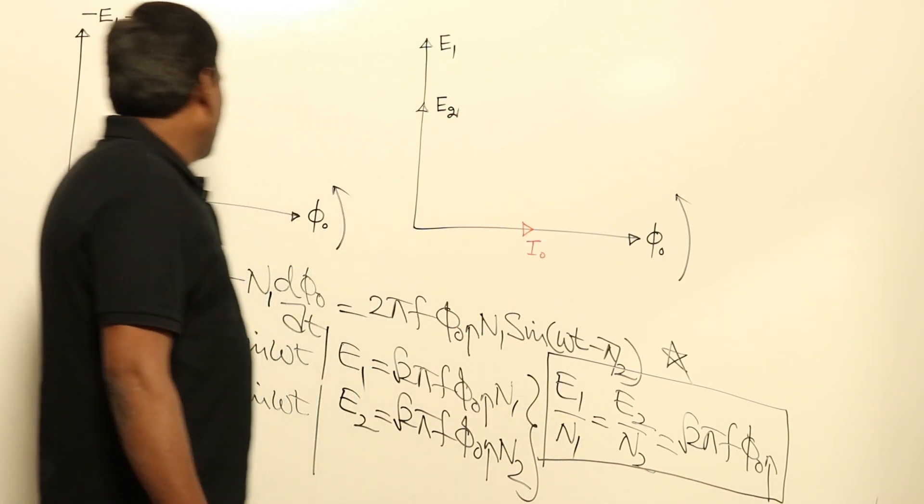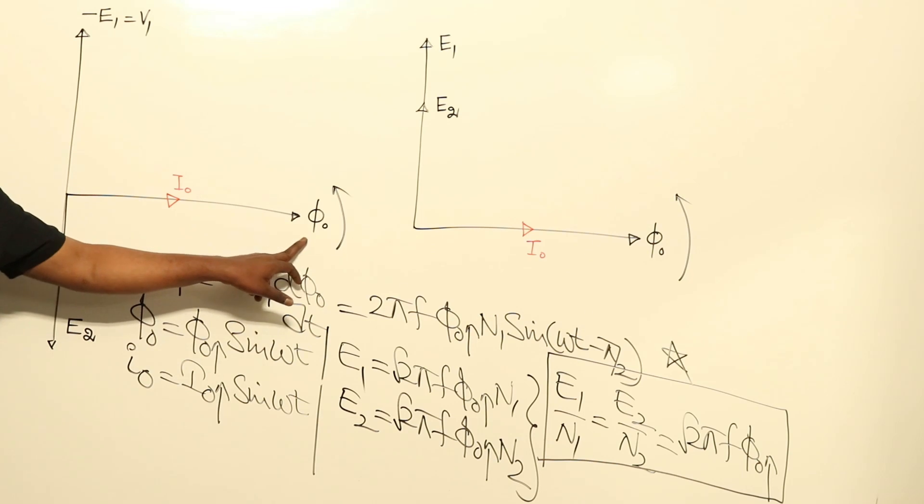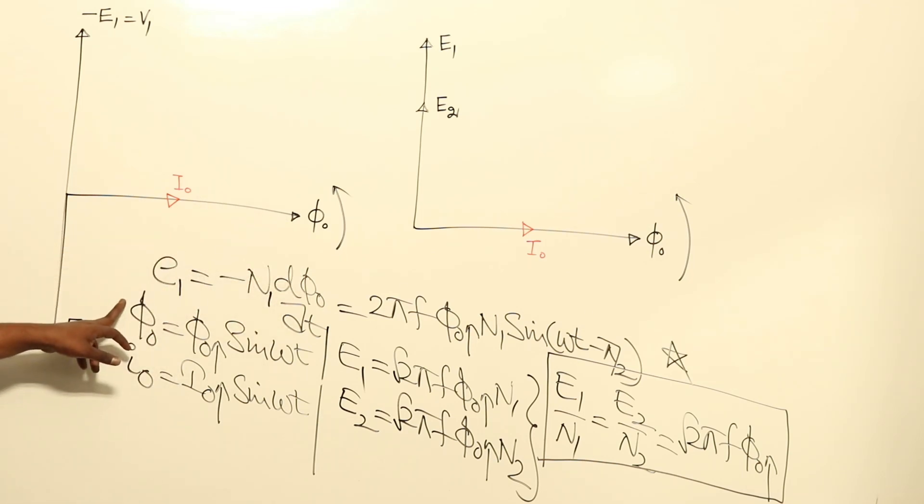Now if I come to phasor diagram - actually phasor diagram is not required for GATE aspirants. Maybe they can give directly phasor diagrams rather than we cannot expect any problems from phasor diagram. Now, for example, if I think of Φ0 and I0 in line...